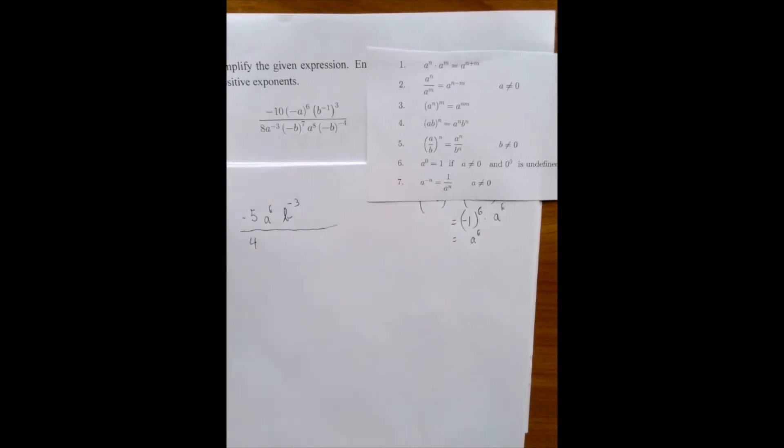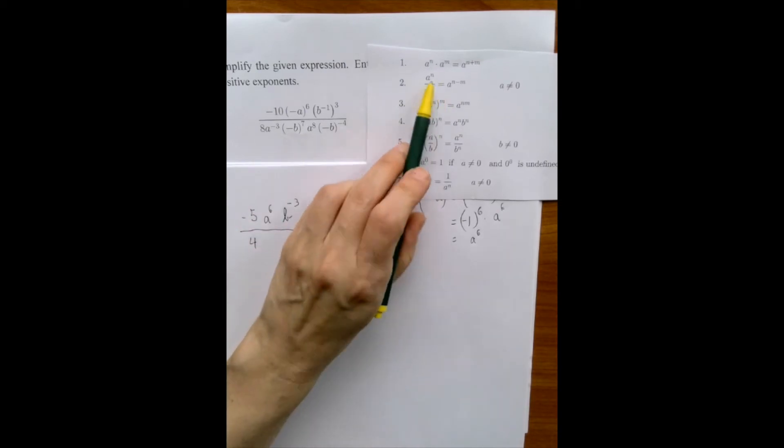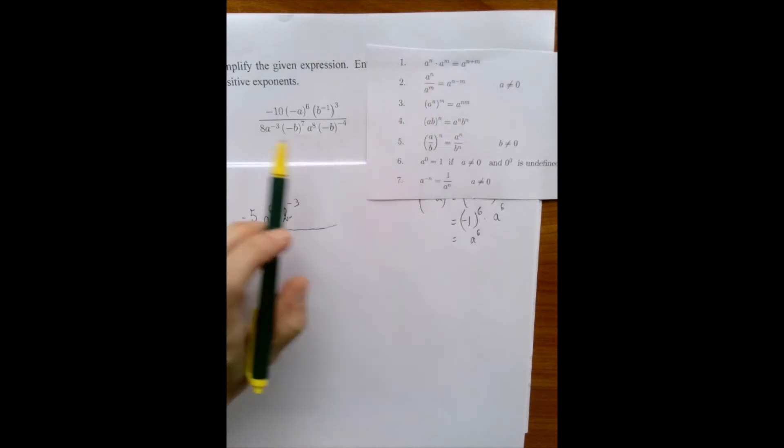A to the minus 3. Well, one way to handle it is we can rewrite it as a to the positive 3 in the numerator. But I'm also seeing this a to the 8 here. So I'm just going to combine these two using the very first rule. That if the base is the same, multiplication means add the exponents. So a negative 3 plus 8 is 5. So we're going to have a to the 5 in the denominator.